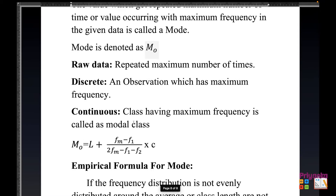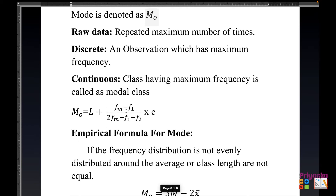For continuous data, the only formula you need to remember is: the class having maximum frequency is called the modal class, denoted as fm. The formula is: Mode = Lower Limit + [(fm − f1) / (2fm − f1 − f2)] × class length.